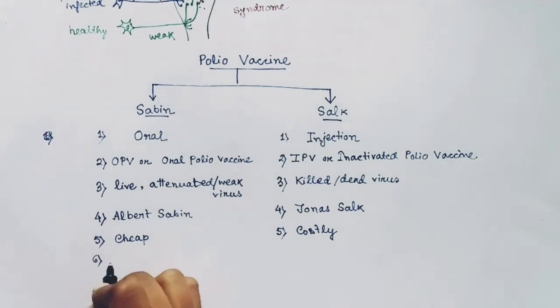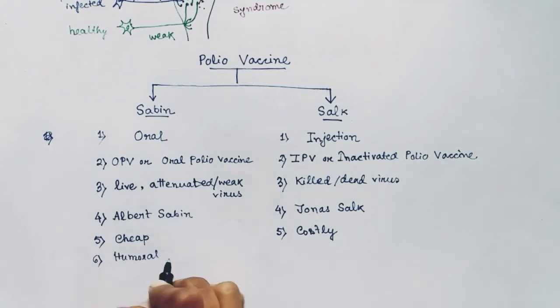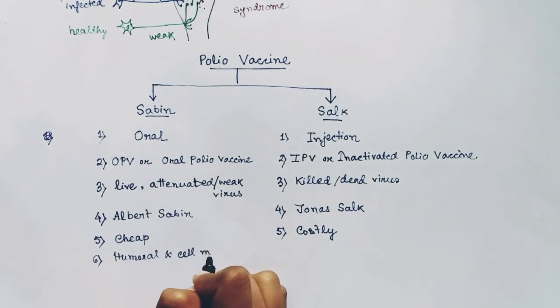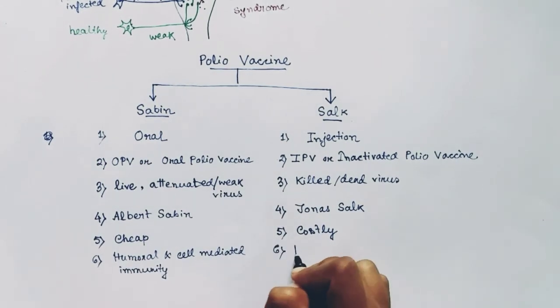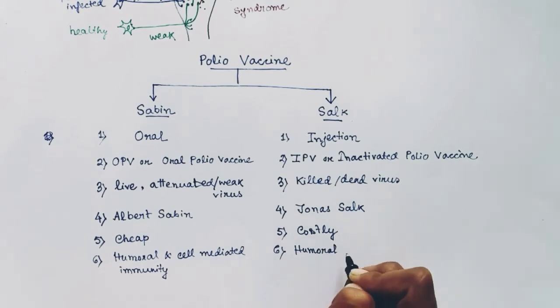And the sixth difference between Salk and Sabin is Sabin works in humoral and cell-mediated immunity, but Salk works on the humoral immunity only.